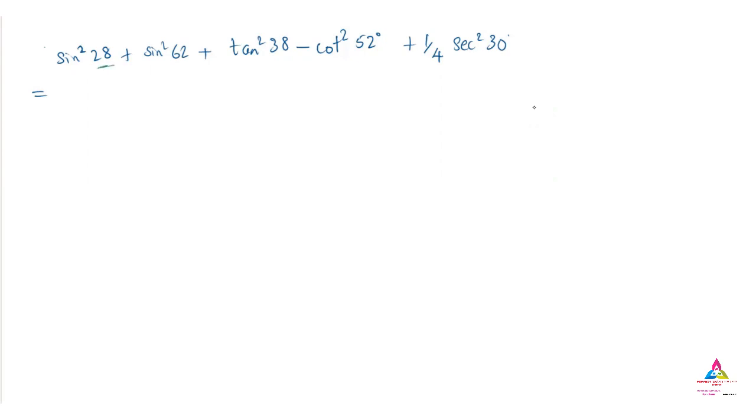This is complementary because 62 and 28 are complementary to each other, so convert anyone. The sine square 28 degree plus sine square can be done as cos square 90 minus 62 degree, and this one also same thing.